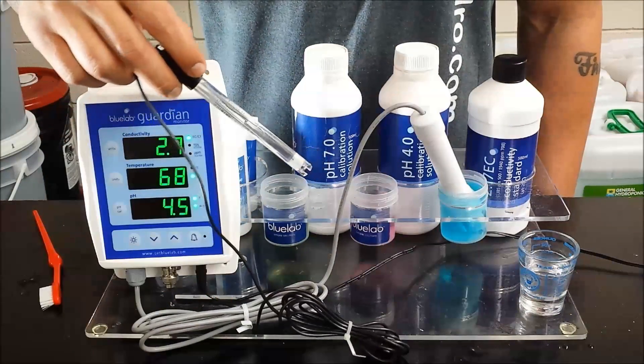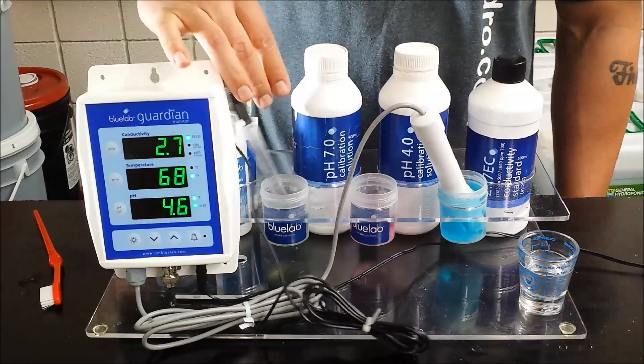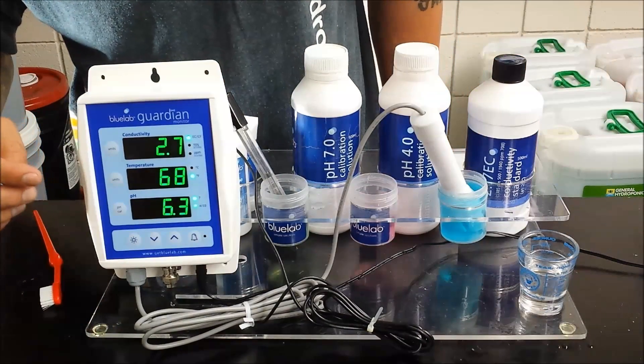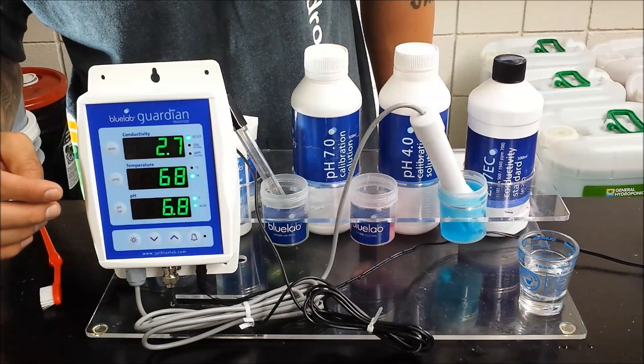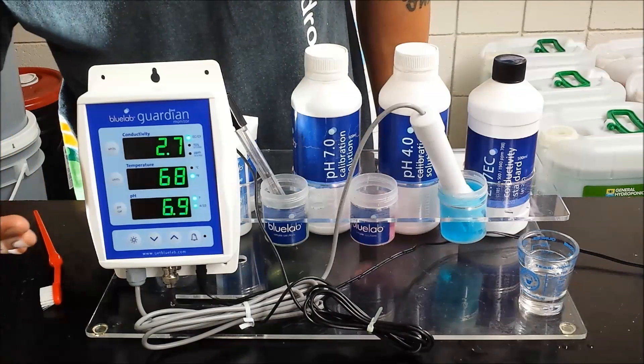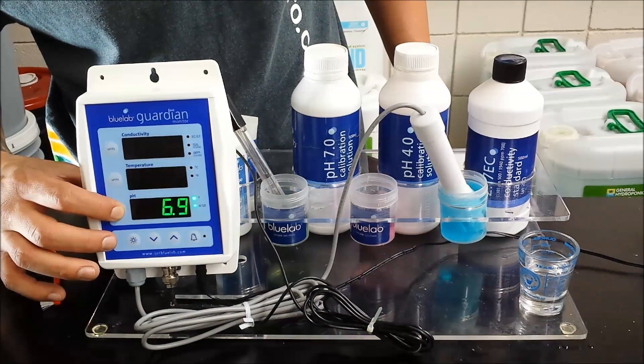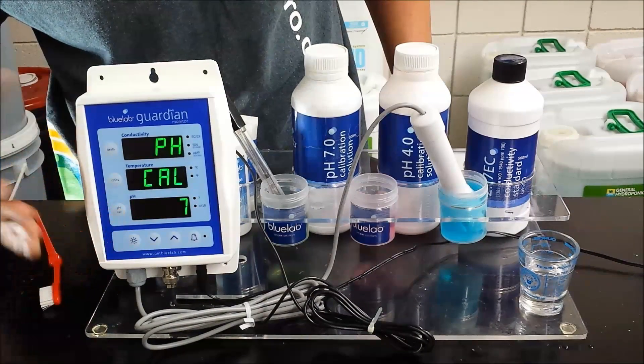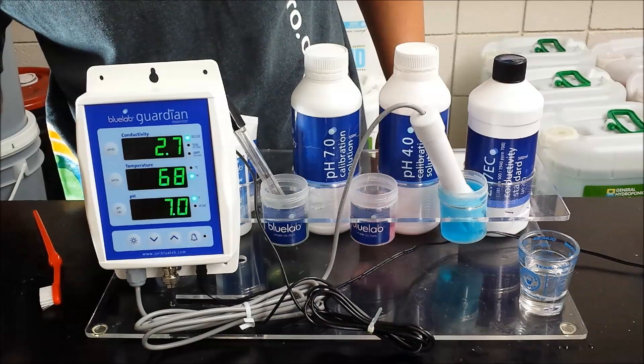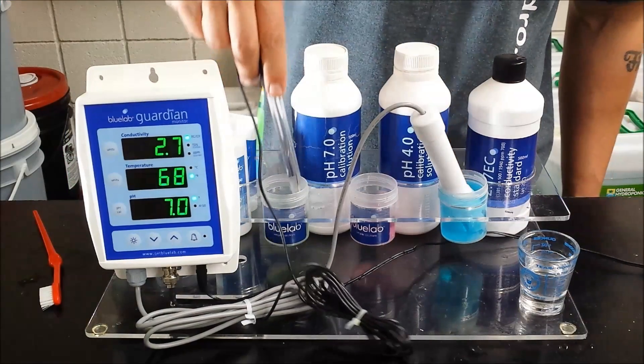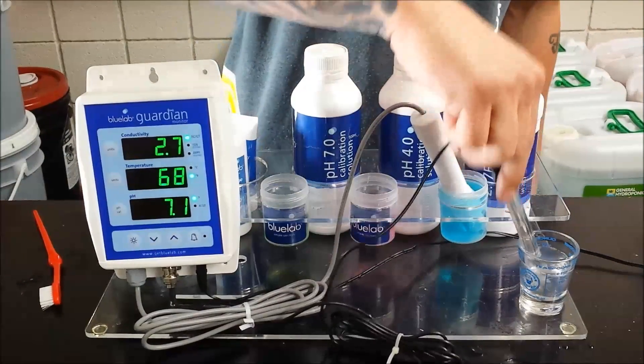So we're going to go ahead and put it in the 7.0 first. Once it settles on a reading go ahead and hold down the pH Cal button until it says pH Cal and it locks on the 7 for you. Take it out, rinse in some water.